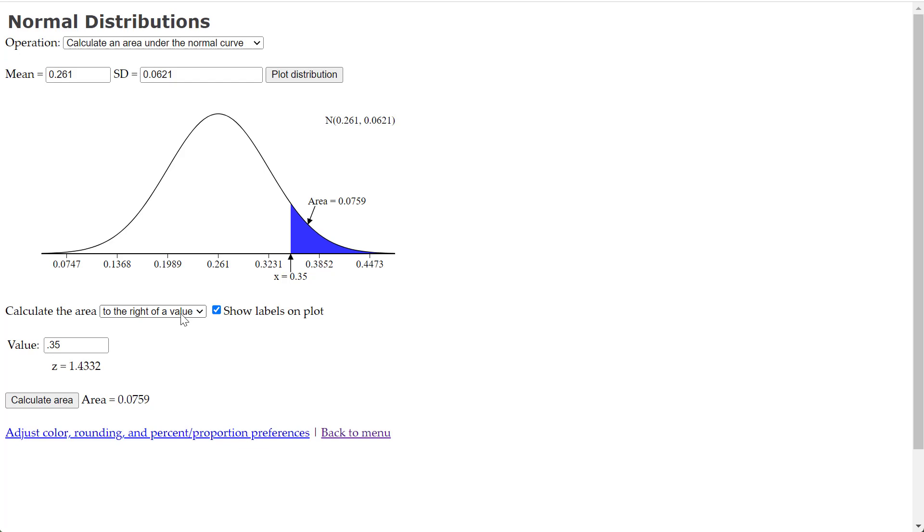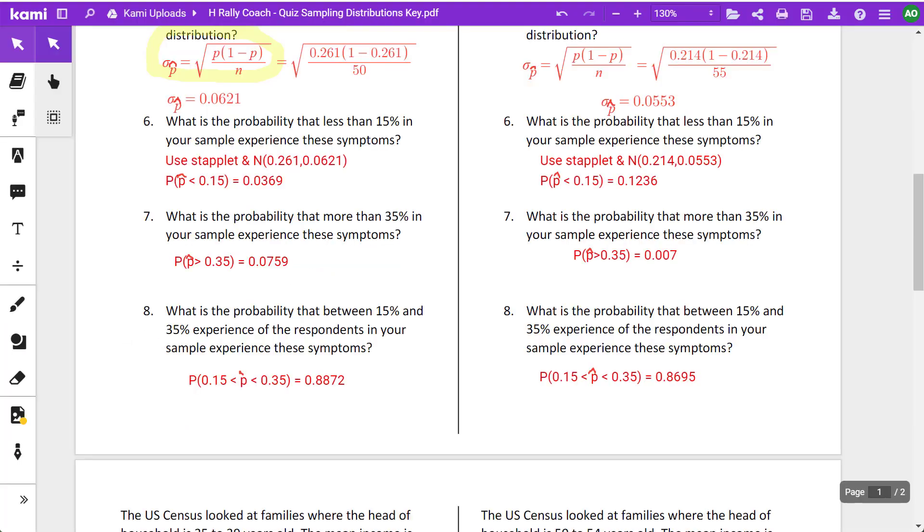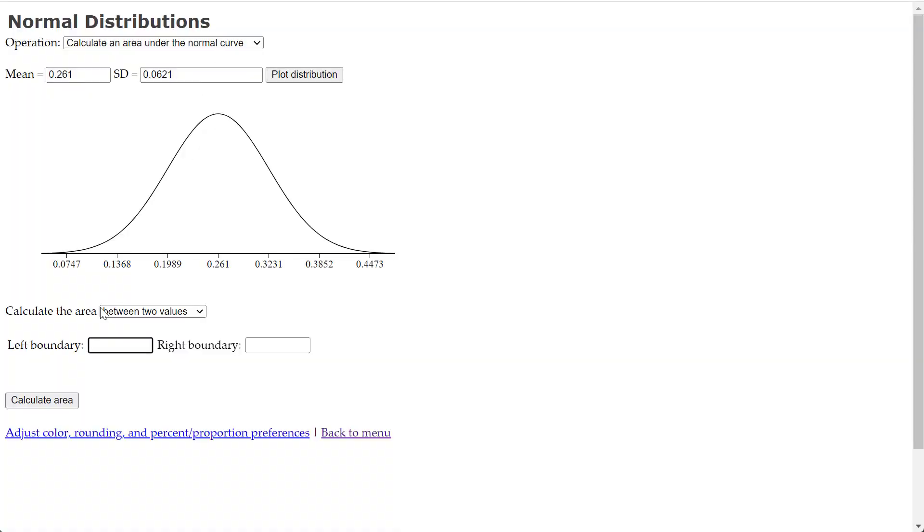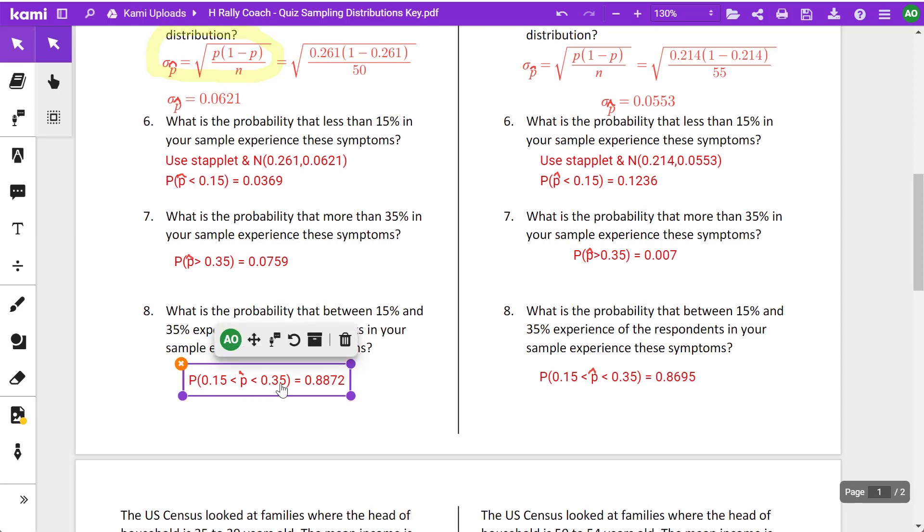Now they want more than 35%. So I go to the right of the value and I go 0.35. Calculate my area. I get 0.0759. And then I do between both those values, between 0.15 and 0.35. Calculate your area. And there it is 0.8872.